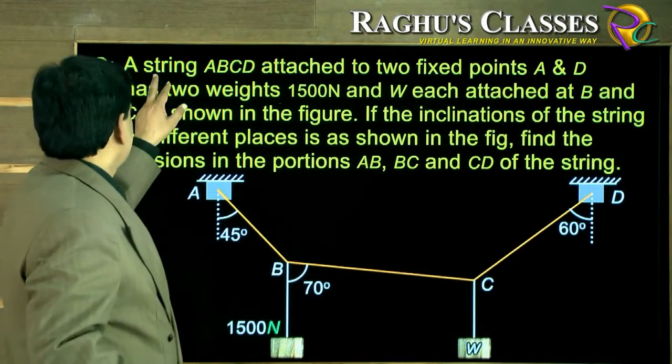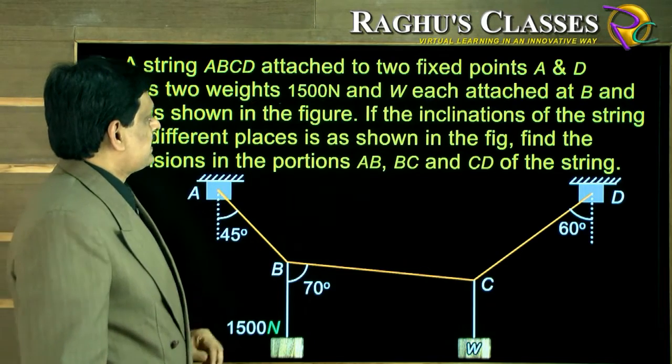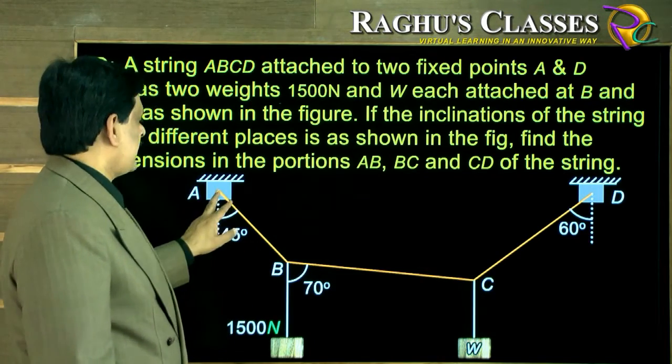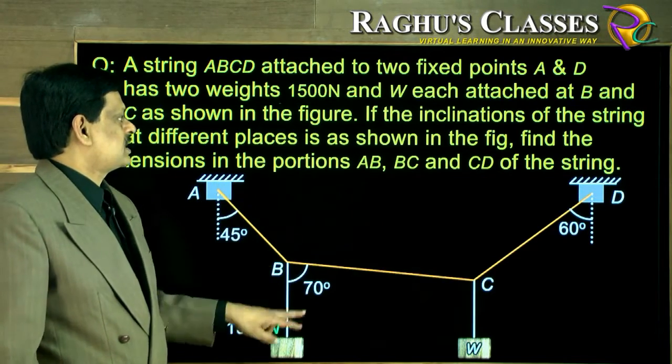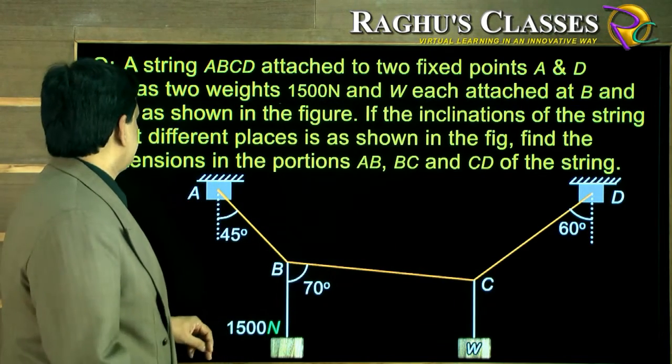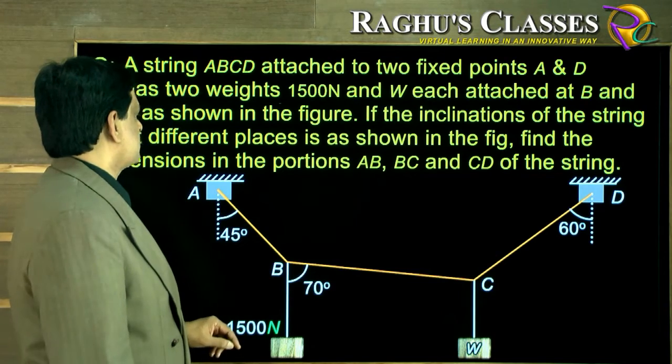Look at this question here. A string ABCD attached to two fixed points A and D has two weights, 1500 Newton and W, each attached at B and C respectively.